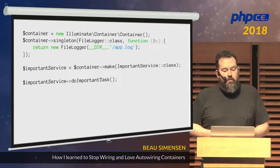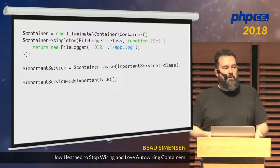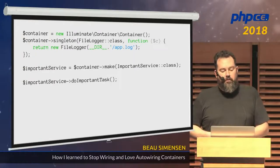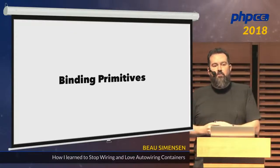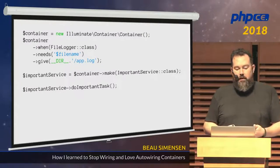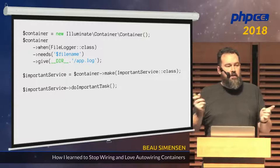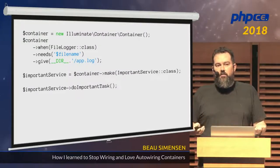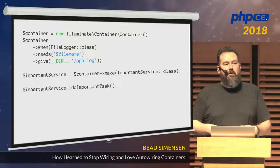Where we start to run into problems is with the FileLogger instance itself — it needs some data the container can't derive on its own, like the path to the filename. This is the concept of binding primitives. Laravel handles this with a neat little chain of methods where you can tell the container: when the FileLogger class needs $filename, give it this value. That's all you need to do. You don't have to define FileLogger anymore — just define the edge case, and the container creates everything else on its own.